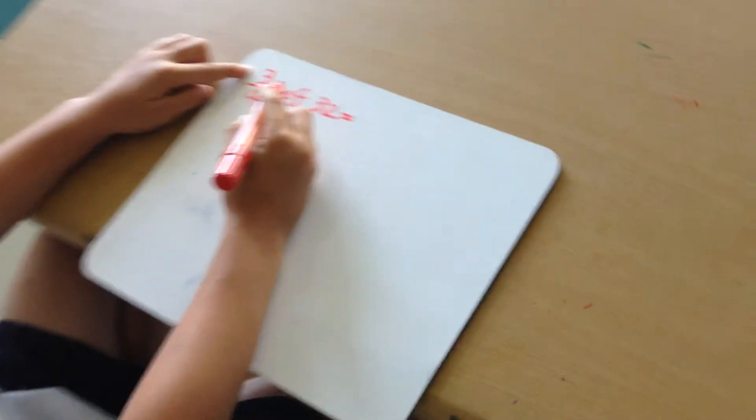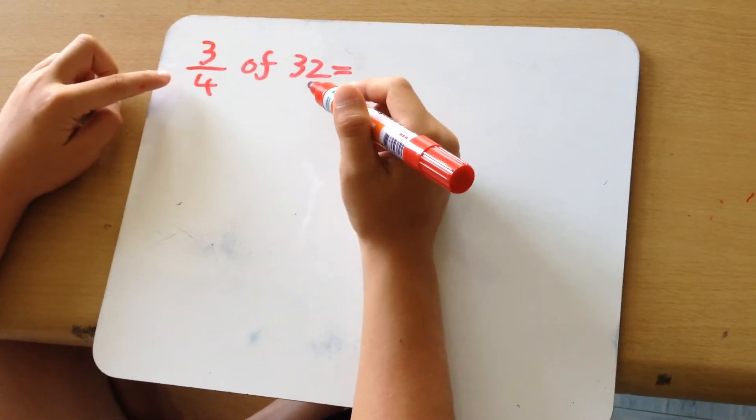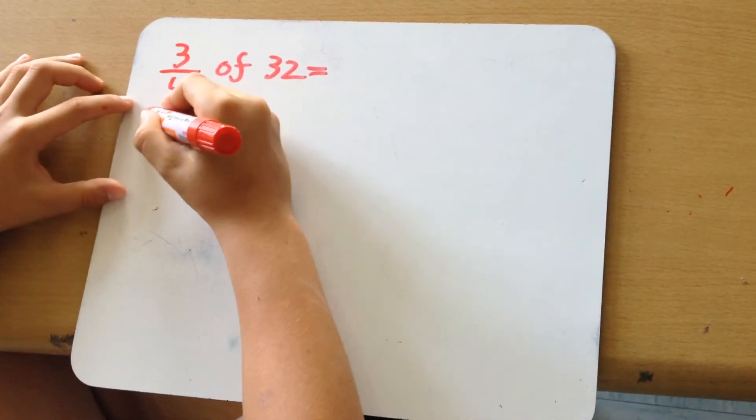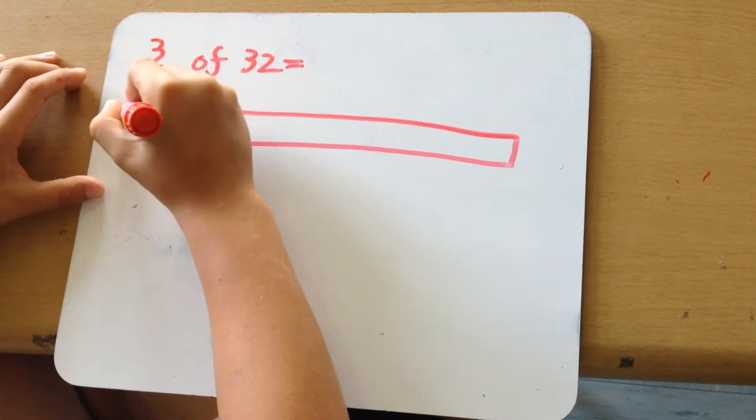So today we're doing three-fourths of 32. So we have to draw four boxes.